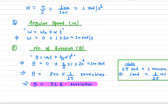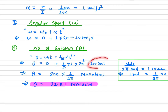Plugging in the values: omega-naught is zero because the merry-go-round was initially at rest; alpha is 1 rad/s²; and time is 20 seconds. So θ = ½ × 1 × 20² = 200 radians. In 20 seconds the merry-go-round has covered 200 radians.